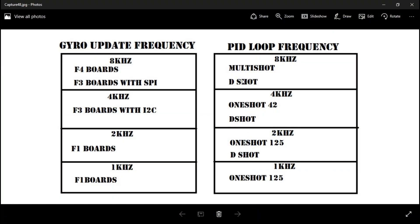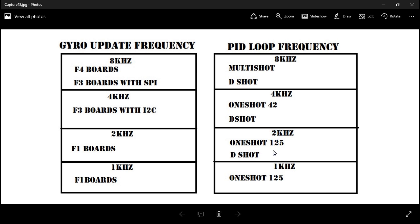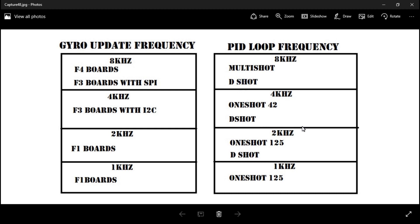You can use Multishot and Dshot ESCs on a NAXF32 — you just can't use 2k, 4k, or 8k with them. With Oneshot125 ESCs, you can actually run them up to 2k. The big point is, no matter what ESCs you're using — Oneshot125, 42, Multishot, or Dshot — on this board you can only use the full potential of Oneshot125, which is the slowest of all. That is why I made that NAXF32 rant video about why not to buy one — you're only looking at 1k for the PID loops.